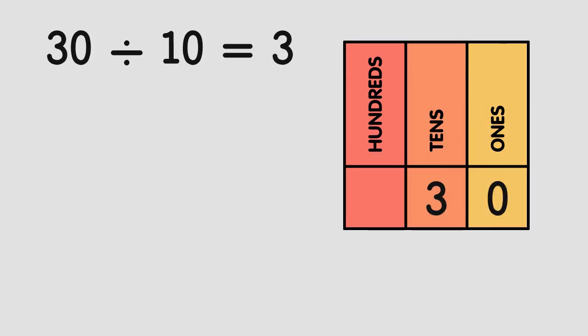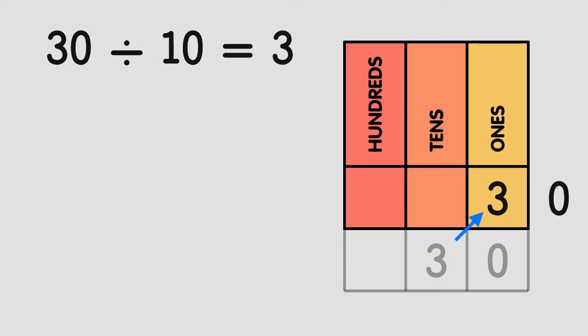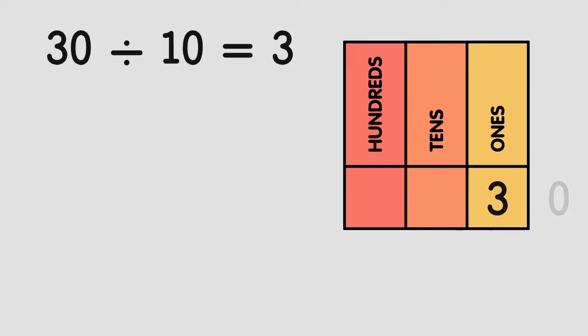30 divided by 10 was 3 — and we can get the same answer if we move all the digits one place value to the right. The three in the tens moves one place value to the right and becomes three ones. The zero in the ones also moves to the right, past the decimal as 3.0, which is the same as three, so we can cross it off. Our number instead of being three tens, when divided by 10, became three ones.